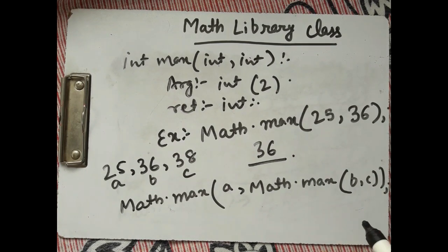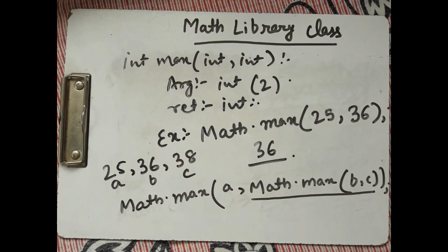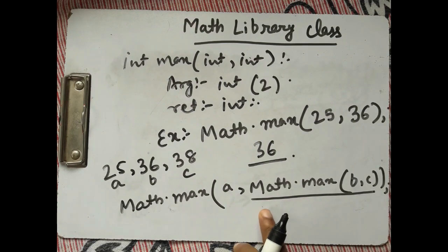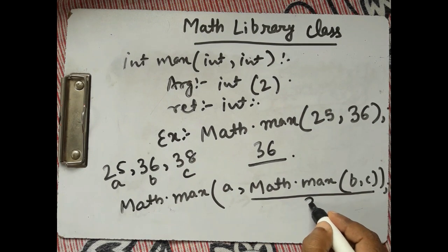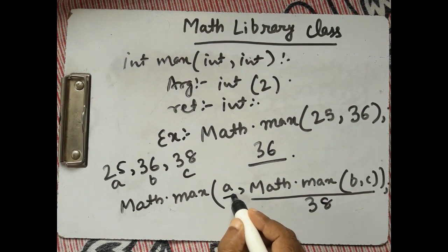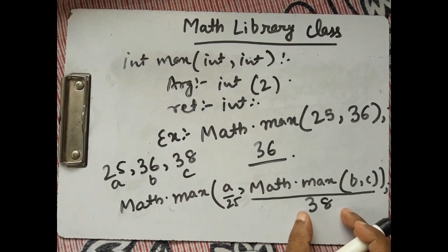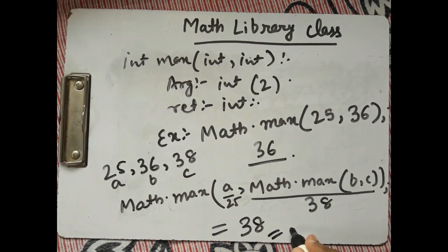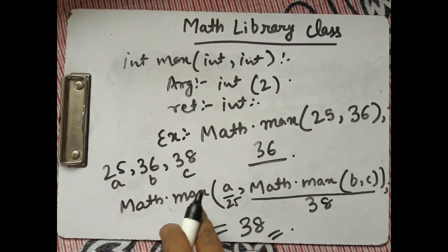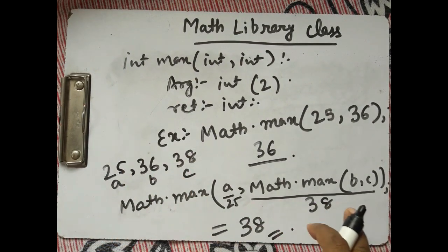Math.max(b, c) executes first due to Java's precedence rules, returning the maximum between b and c — which is 38. Then Math.max(a, 38) returns 38 as the final answer. Similarly, you can extend this approach for four numbers as well.